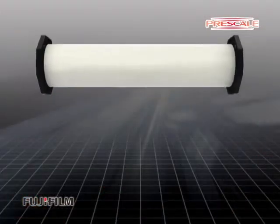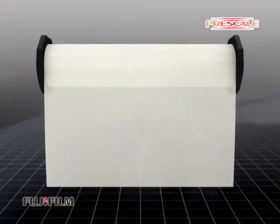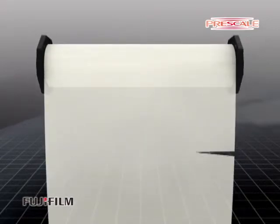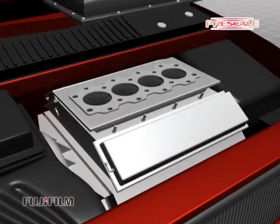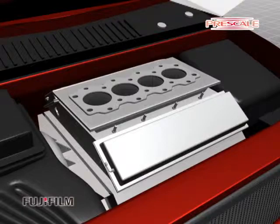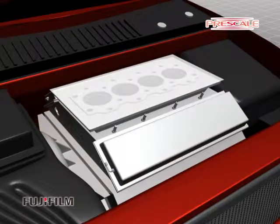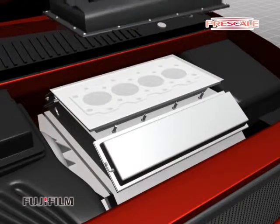To do this, cut Prescale a little bit larger than the size of the exact gasket size to be measured. Set the piece of Prescale onto the actual gasket position and apply the prescribed torque to the bolts.